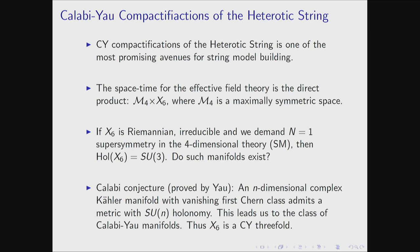But there's no guarantee that such manifolds actually exist. The Calabi conjecture, proved by Yau, showed the existence of such manifolds. So we come to the conclusion that the internal space X is a Calabi-Yau threefold.